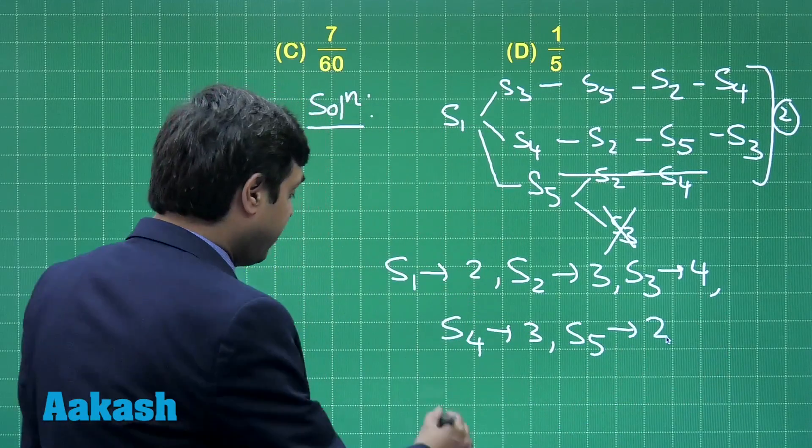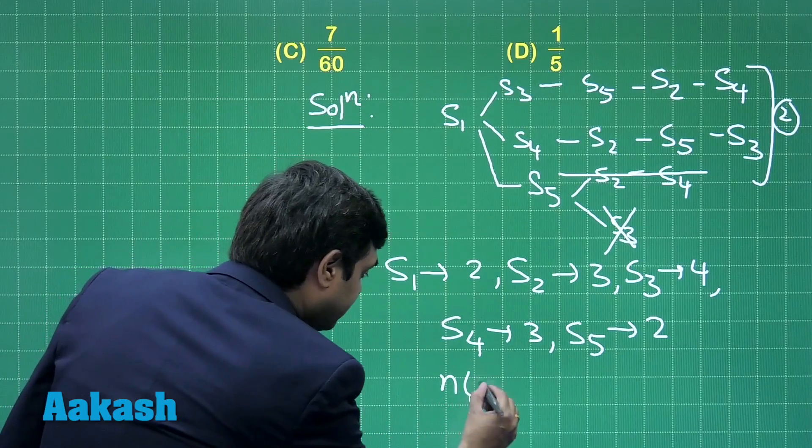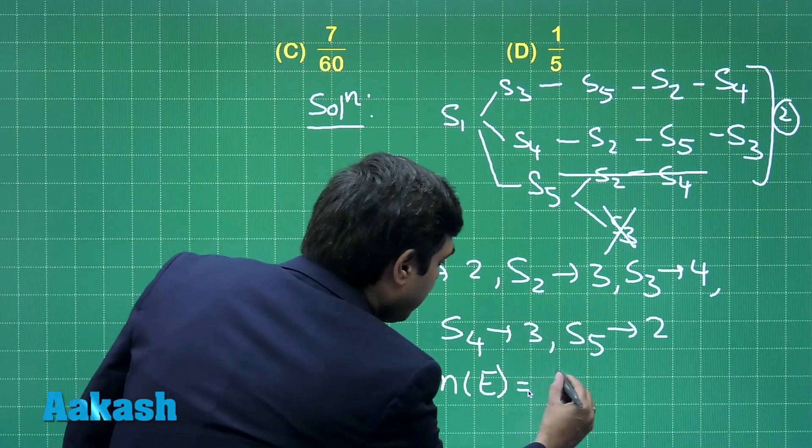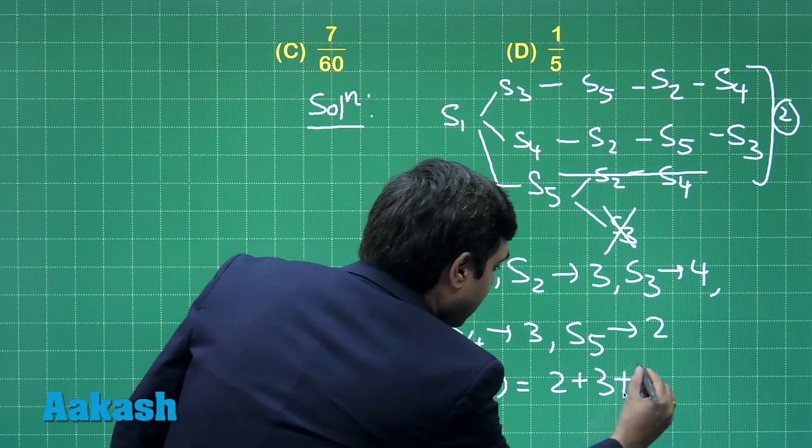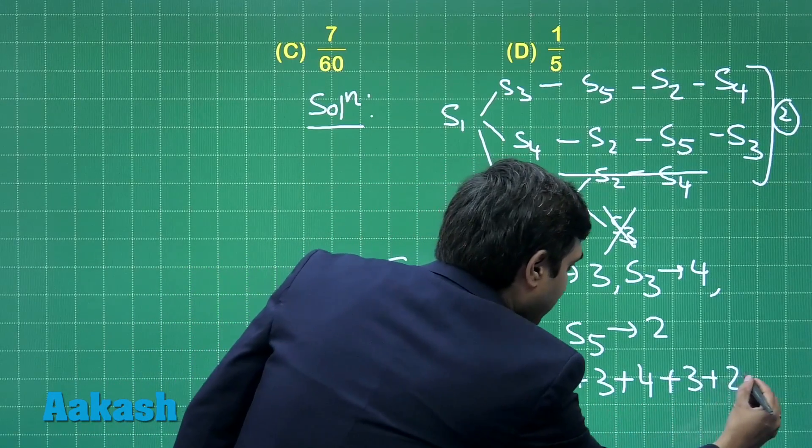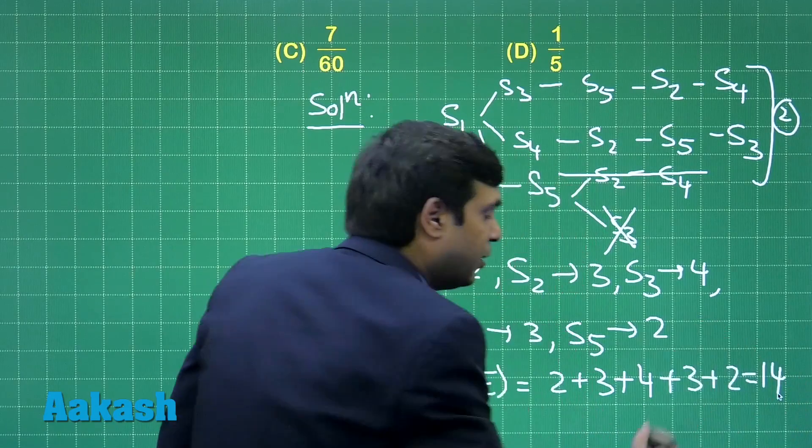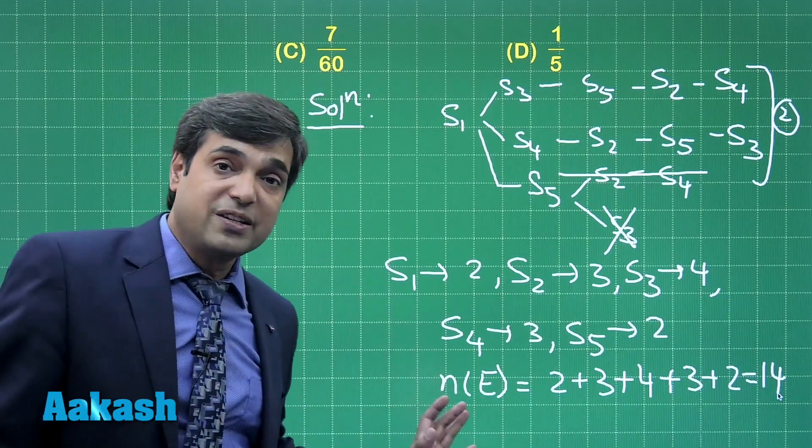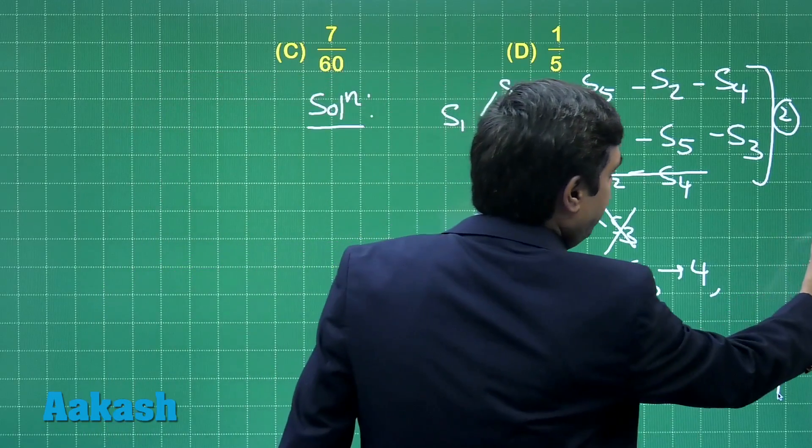So total favorable cases we get 2 plus 3 plus 4 plus 3 plus 2, that is 14. Total number of cases 120, as said earlier in the last question as well.